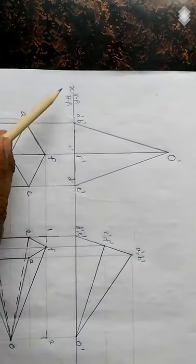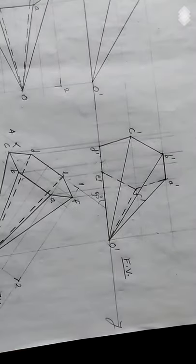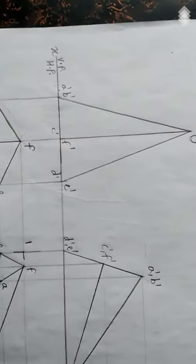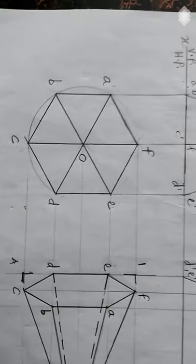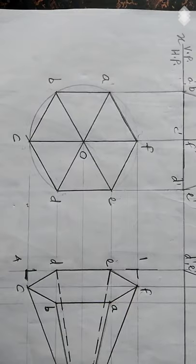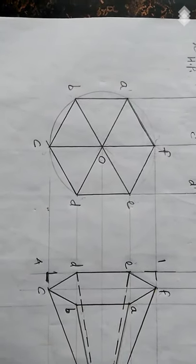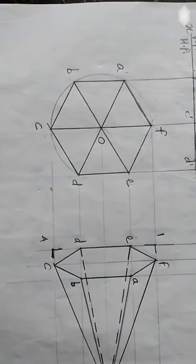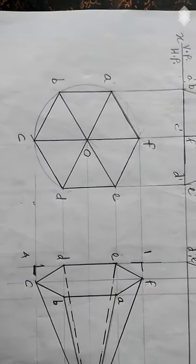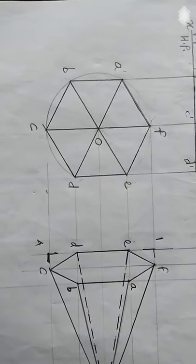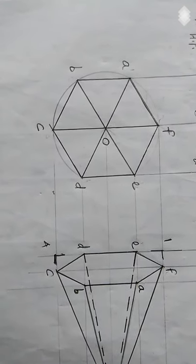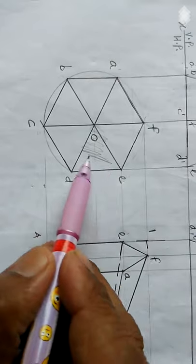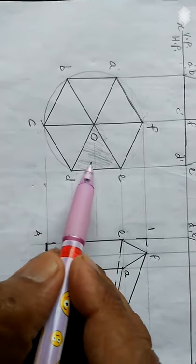First of all, along the HRL we should construct the XY line. Note down: vertical plane, horizontal plane. We are going to use the first angle method. We should start by constructing the first sketch — the true shape of the base, which is the hexagon. It is going to rest on the horizontal plane on one of its triangular lateral surfaces.